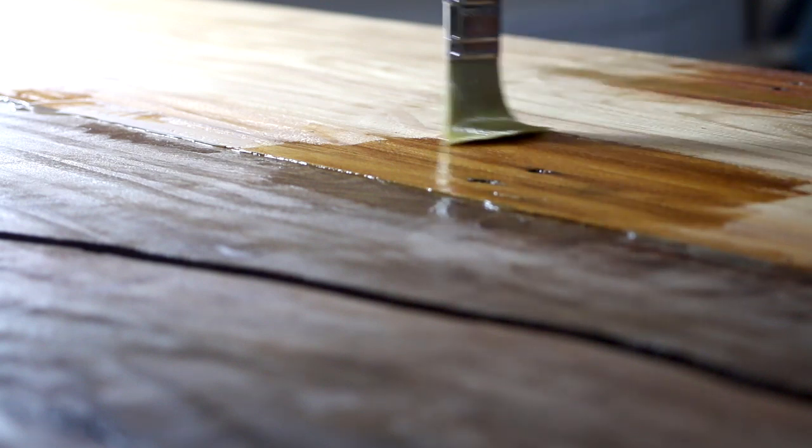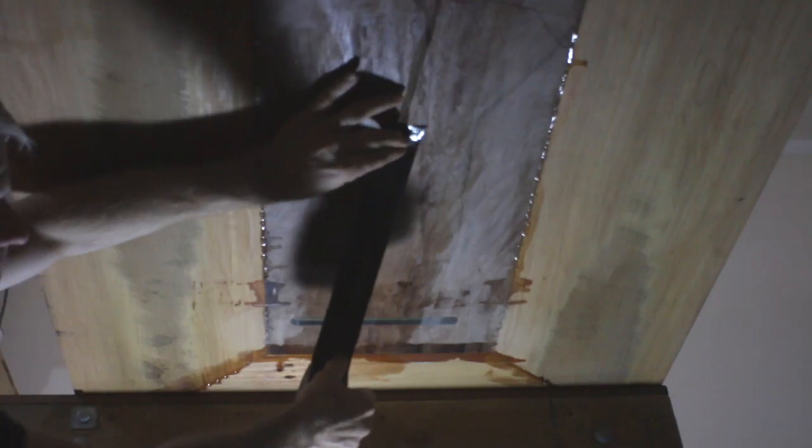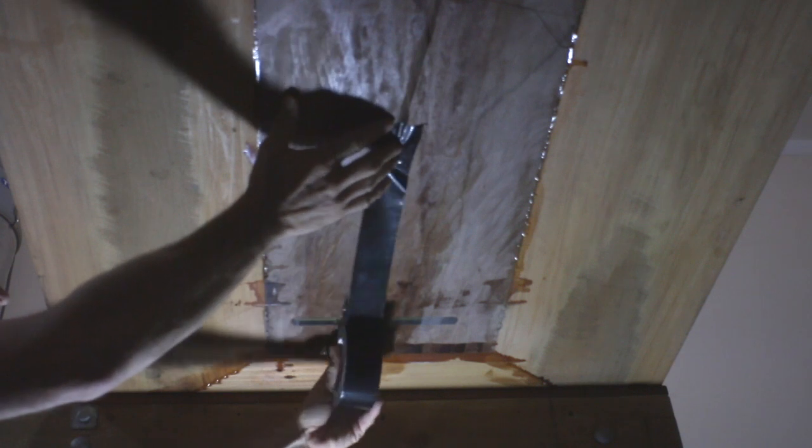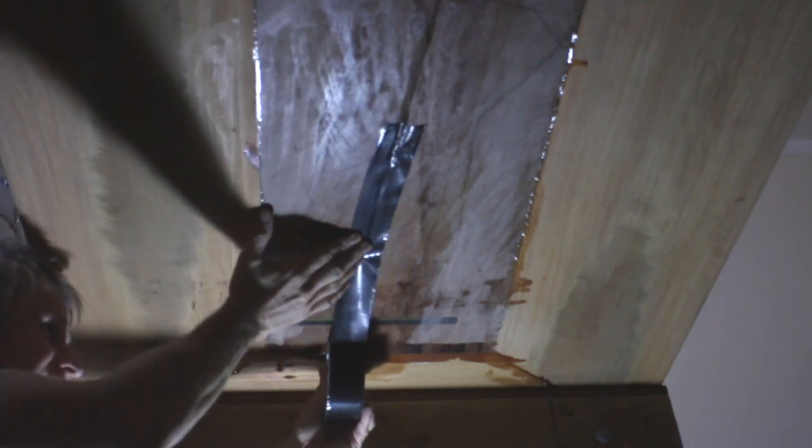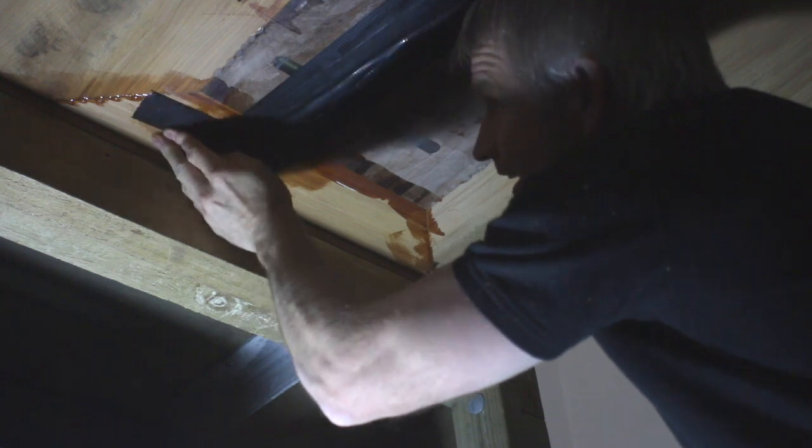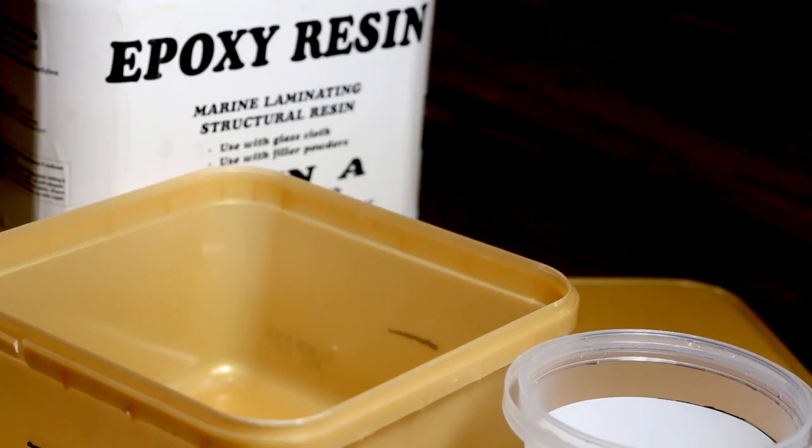But before I could get on with my table legs, I had to take care of a few things. This little thing called the tabletop needed to be planed down, and I needed to pour some epoxy resin into a certain cavity.